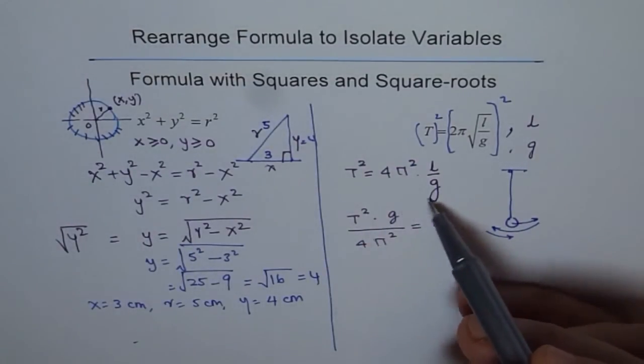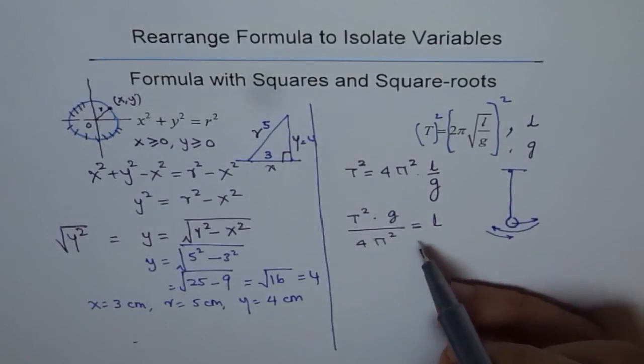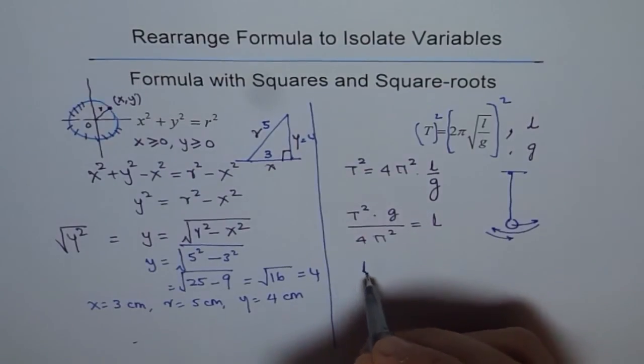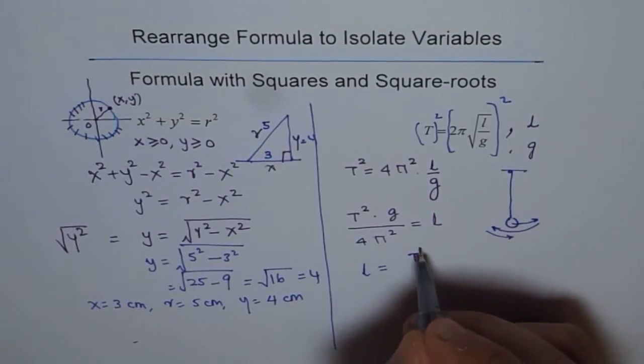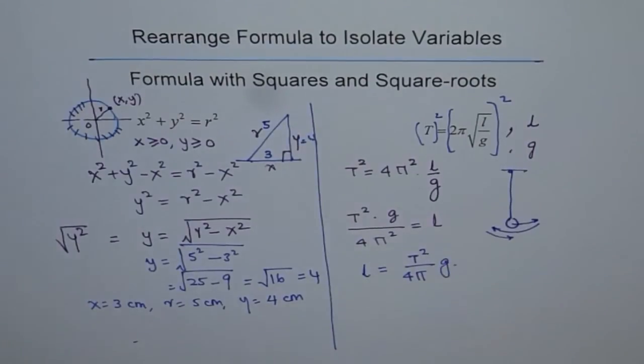From here we can find the length. I multiplied by g both sides, got it here, and divided by 4π². So that is my formula for length. I can write length for a given time period as l = T²g/(4π²).